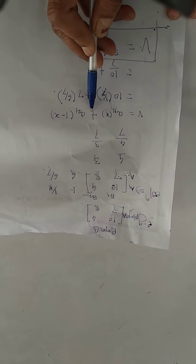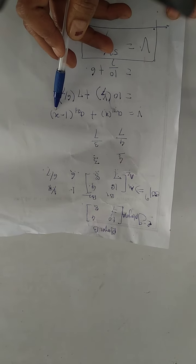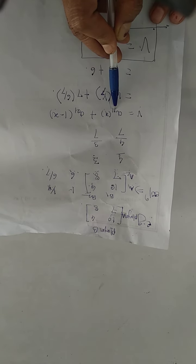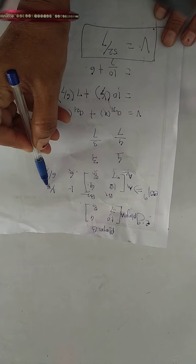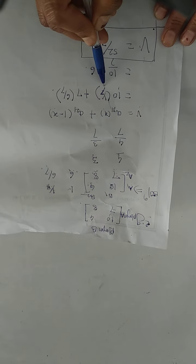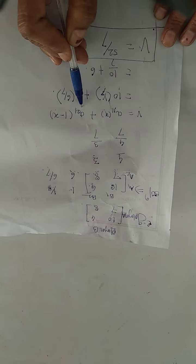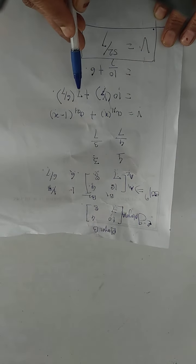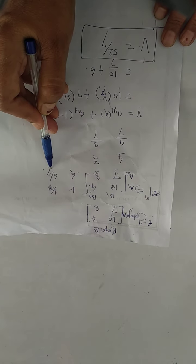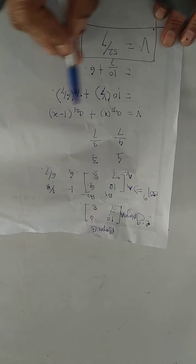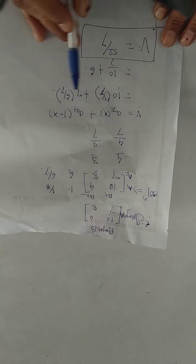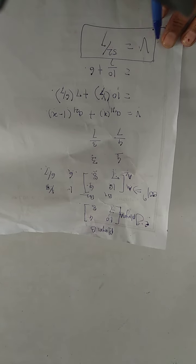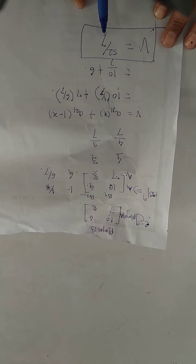Then the value of game. The formula is: V is equal to A11 times x plus A21 times (1 minus x). A11 means first row, first element — that is 10. x means strategy for A1, which is 1 by 7. Plus A21, which is 7. And strategy for A2 is 6 by 7, or 1 minus x — 1 minus 1 by 7 is 6 by 7. Multiplying and adding gives 52 by 7. Therefore, the value of the game is 52 by 7.